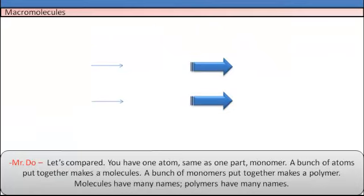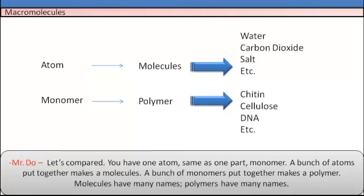Let's compare. You have one atom, same as one part monomer. A bunch of atoms put together makes a molecule. A bunch of monomers put together makes polymer. Molecules have many names. Polymers have many names.